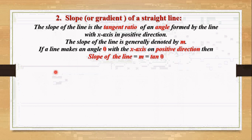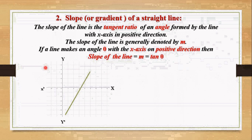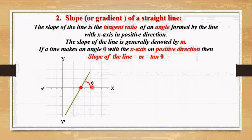Let's describe it with the help of a figure. The coordinate axis is here and the straight line is here. We are going to measure the slope of this straight line. At the point of intersection, we measure the angle theta in the positive direction of the x-axis. The tangent ratio of this angle is called the slope, so slope m equals tan theta.